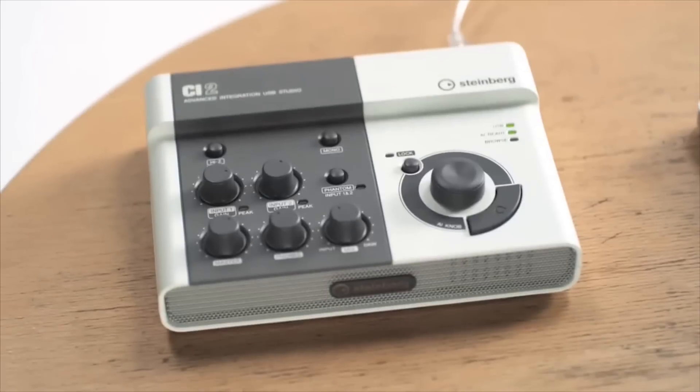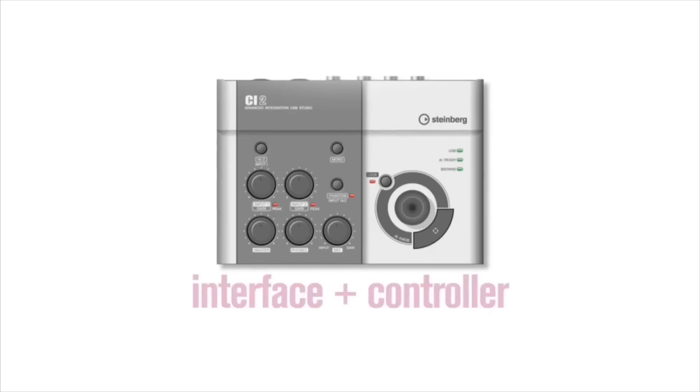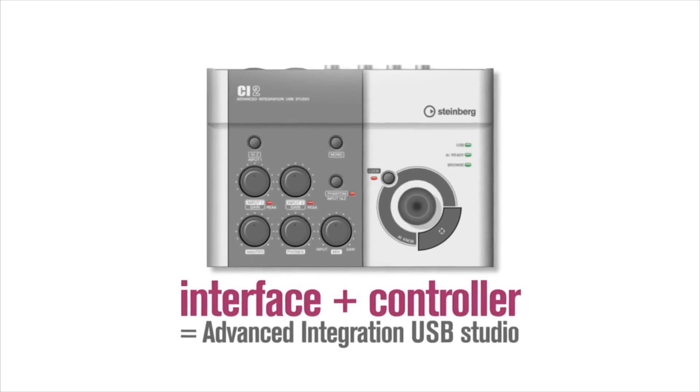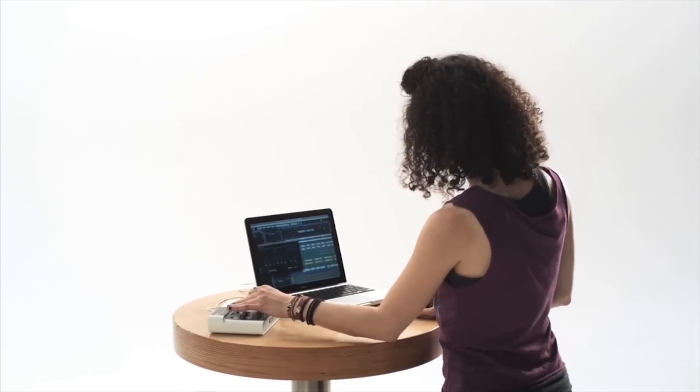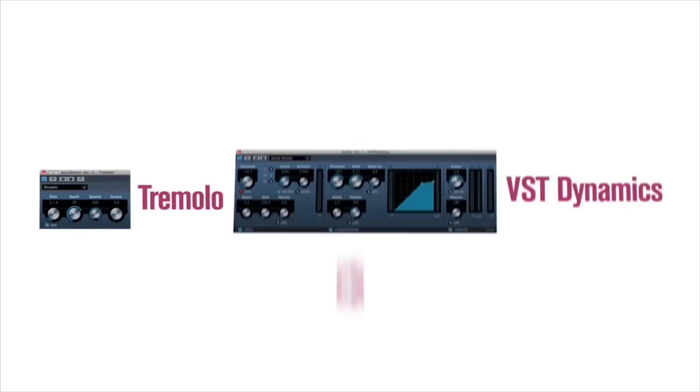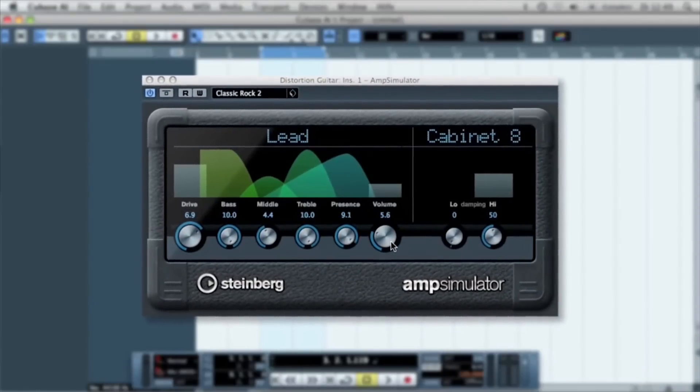CI2 is much more than an interface. It's also a professional controller that lets you get hands-on with your music in a way you can't with any other audio hardware in its price class. Edit your sounds and all parameters and use the over 30 effects and instruments already included. Just pick up the parameter with your mouse, then control it directly with the AI knob.